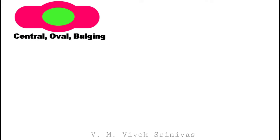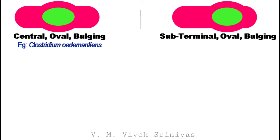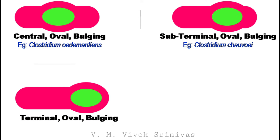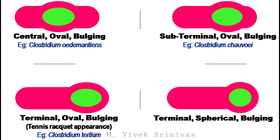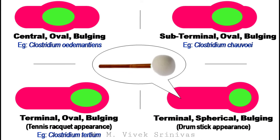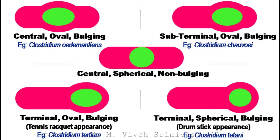If the position and shape is a central oval bulging spore, the example is Clostridium oedematiens. Next, the subterminal oval bulging spore — example: Clostridium chauvoei. Next, the terminal oval bulging spore — it gives the appearance of a tennis racket; example: Clostridium tertium. Next, the terminal spherical bulging spore — it gives the appearance of a drumstick; example: Clostridium tetani. And lastly, the central spherical non-bulging spore — example: Bacillus anthracis, the causative agent of anthrax.